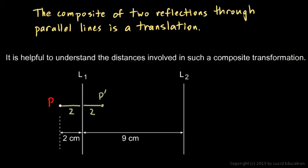And then look what else we're given. The distance between the two lines is nine centimeters. So from that, we can find the distance from P primed to L2. If this is nine, then these two pieces here have to add up to nine. So if that's two, this has to be seven.